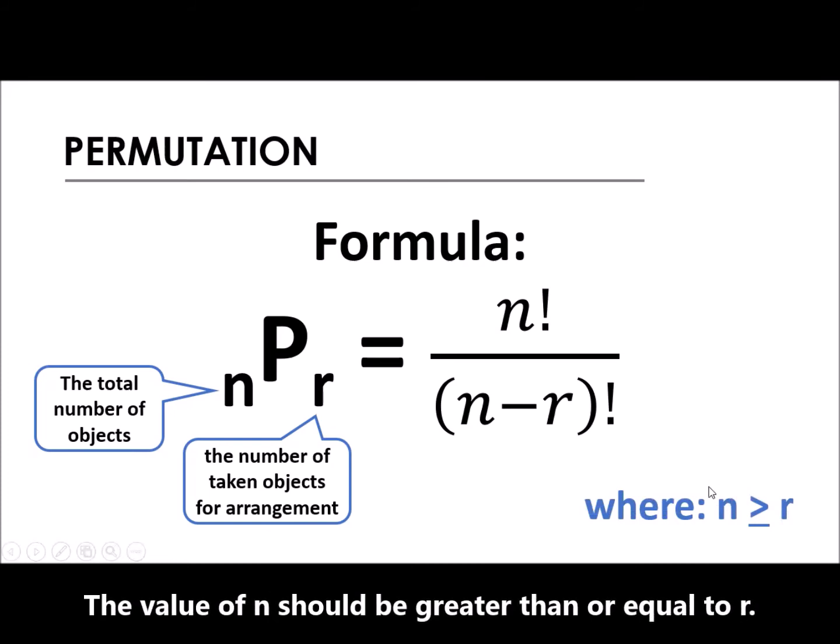This is the most important: the value of n should be greater than or equal to r. The value of n should always be larger than r, or at least equal. Why? Because it would become negative. Notice in the formula, there's a minus sign. We're talking about arrangements, so basically our answers should be positive. I hope that's clear with everyone.